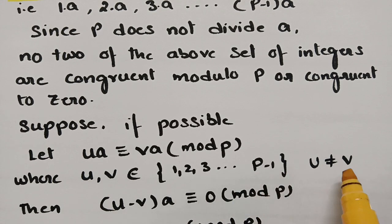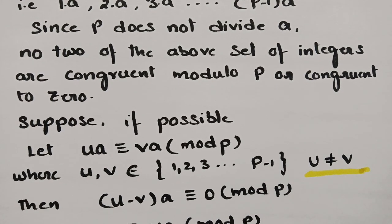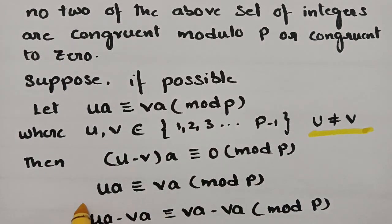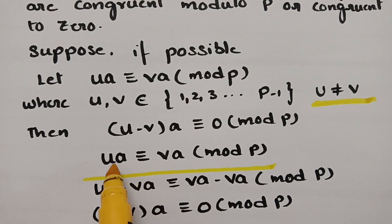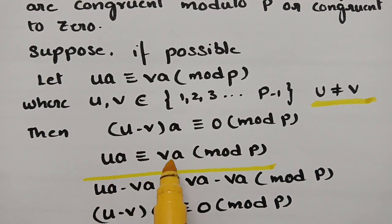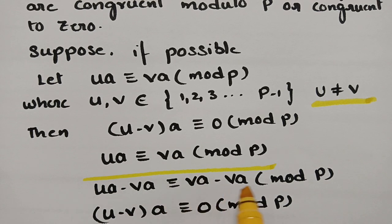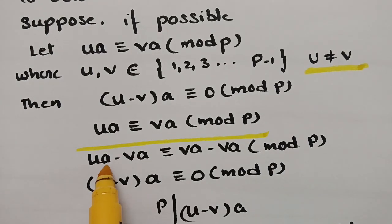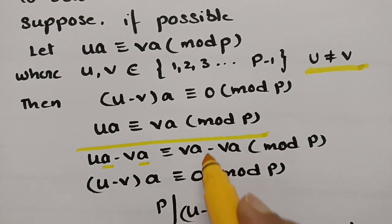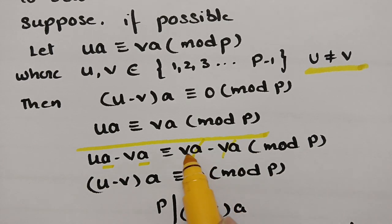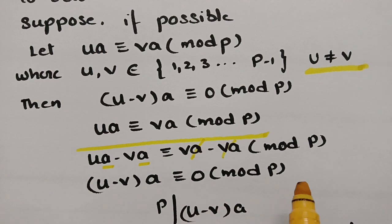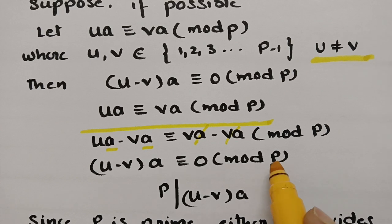Let ua ≡ va (mod p), where u and v belong to {1, 2, 3, ..., p−1} and u ≠ v. If ua ≡ va (mod p), subtracting va from both sides gives ua − va ≡ 0 (mod p). Taking a as common: (u − v)·a ≡ 0 (mod p). Therefore, by the congruence definition, p divides (u − v)·a.